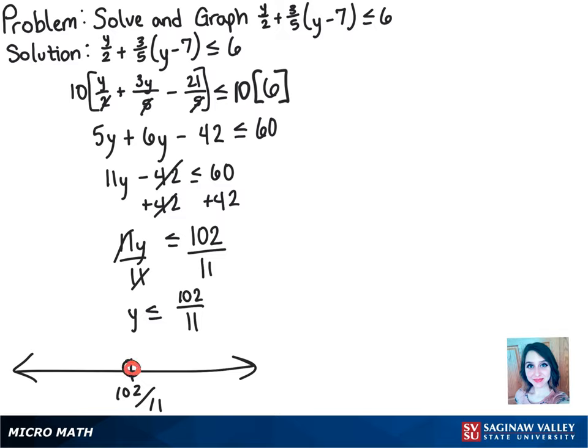Since it's also less than, we shade to the left, because those would include all the numbers on the number line smaller than that.